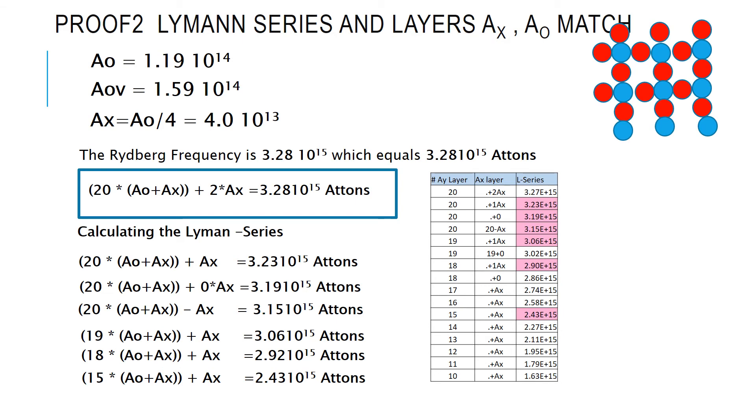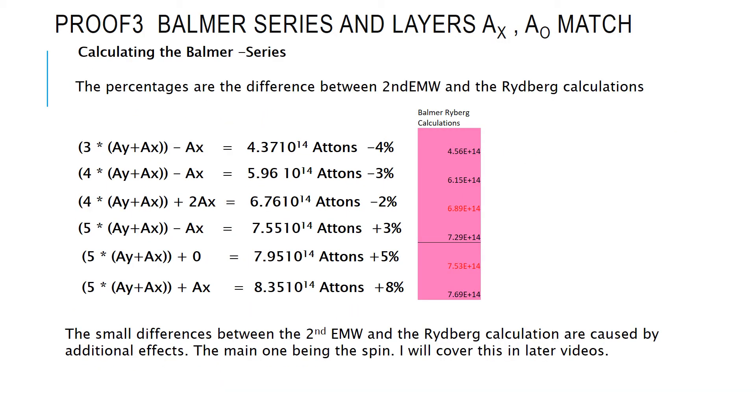So, the next thing, of course, you use the Balmer series, and here also the second electromagnetic wave approach delivers very good results. But I have to also state here that there is a slight deviation between the Rydberg calculation and the second electromagnetic wave layer calculation. The small difference between the second electromagnetic wave and the Rydberg calculation are caused by additional effects. The main one is, of course, the spin. But to detail that here is a little bit too exhausting, and I will cover this in a later video because I'd be running out of time, too.